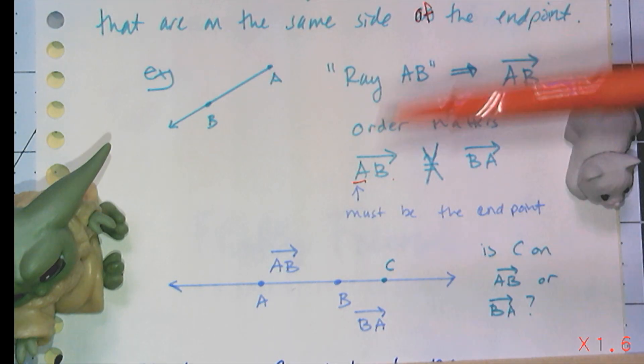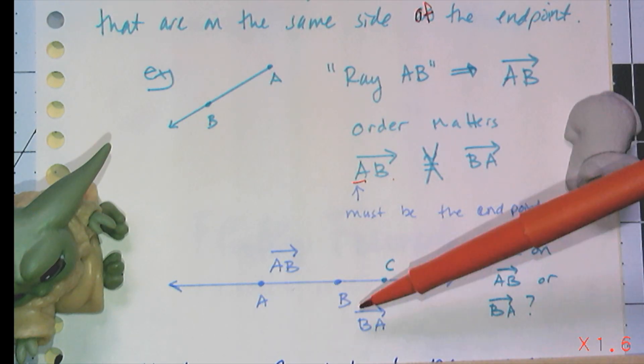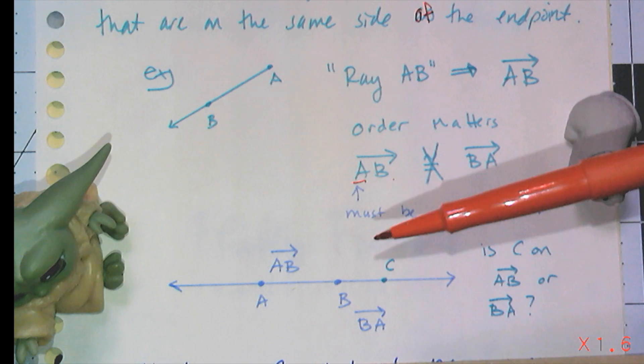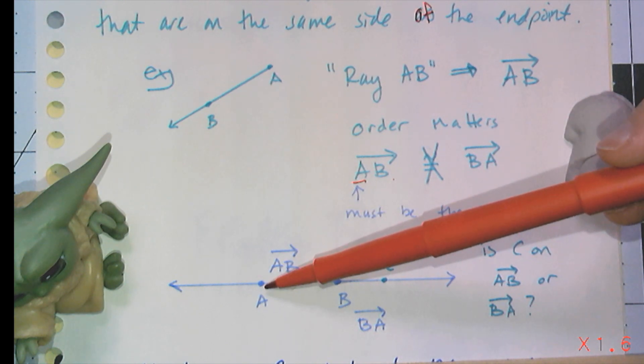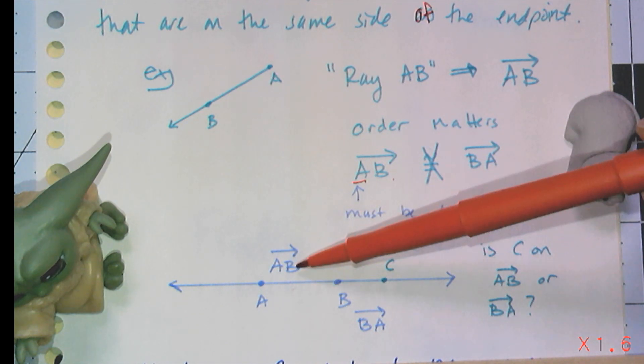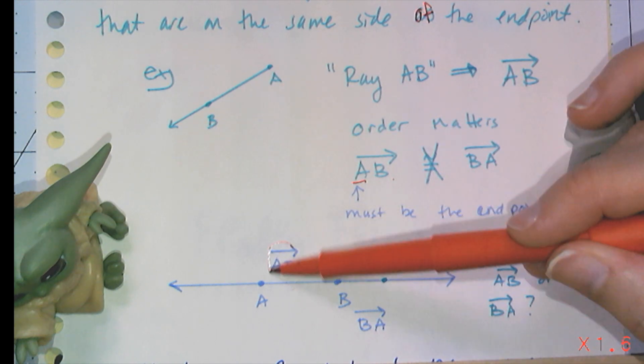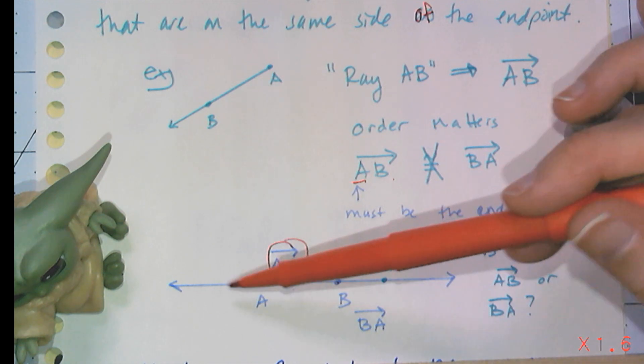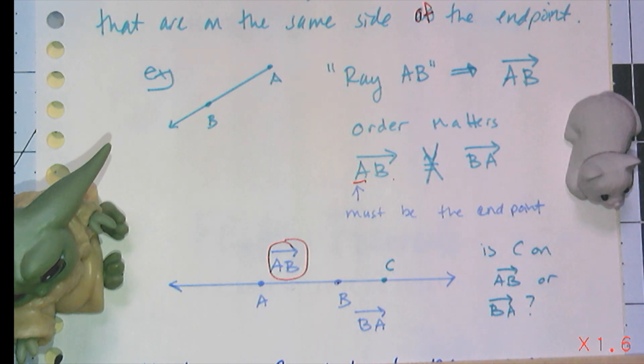I have a question. I have this picture of line AB, and I have ray AB and ray BA, and I have C. Which ray is the point C on? Because the order matters, endpoint of A going in the direction of B, C is on AB. But it's not on BA, because BA starts at B and goes this direction towards A. The order matters for rays because they're directional.